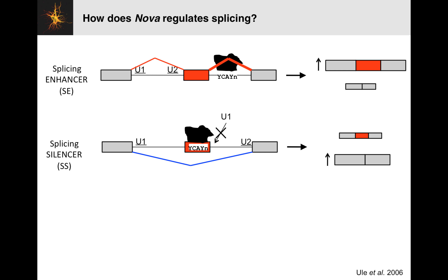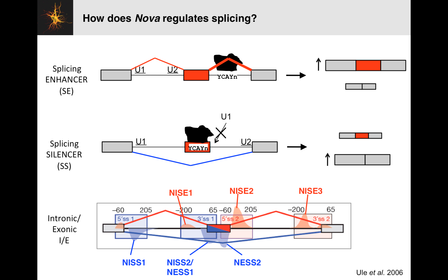The important point is that NOVA binds near the exon and influences splicing, and how it influences splicing depends on where it binds. People have done some really nice work showing regions where binding tends to increase exon inclusion — if NOVA has a binding site around just upstream or just downstream, that will increase inclusion of this exon — and regions where NOVA binding tends to decrease inclusion in the exon, such as on top of the exon or in certain flanking regions.